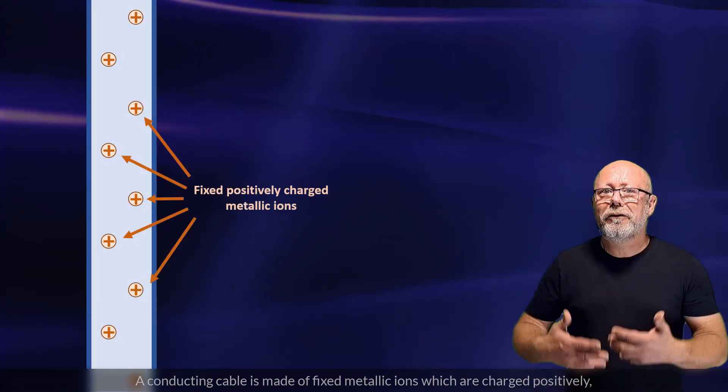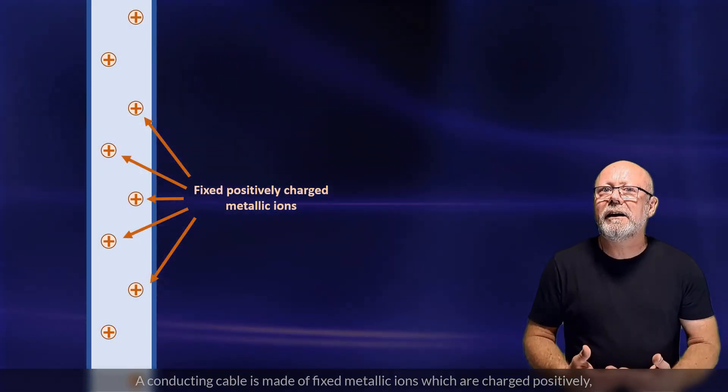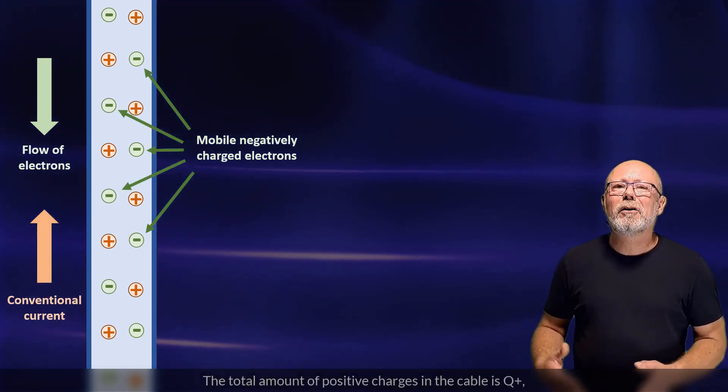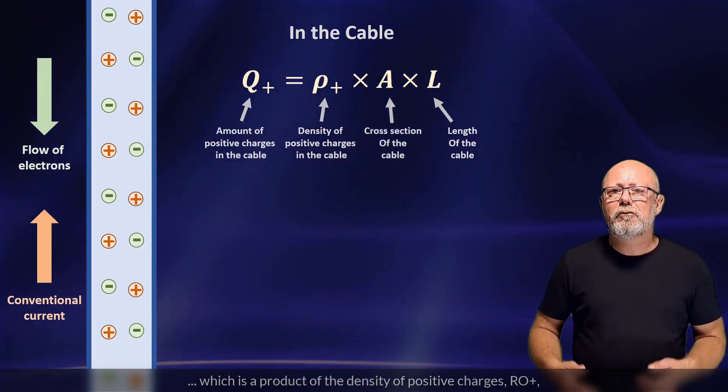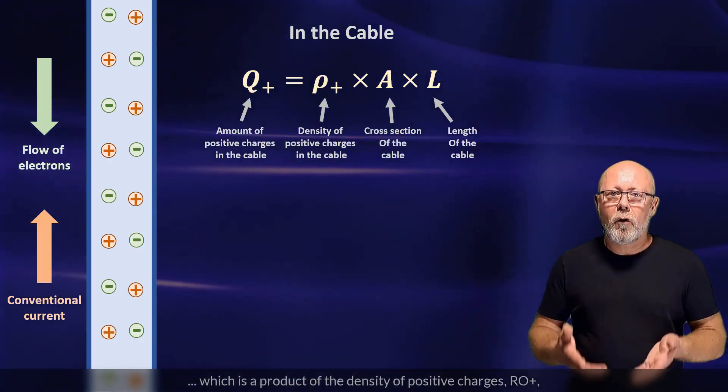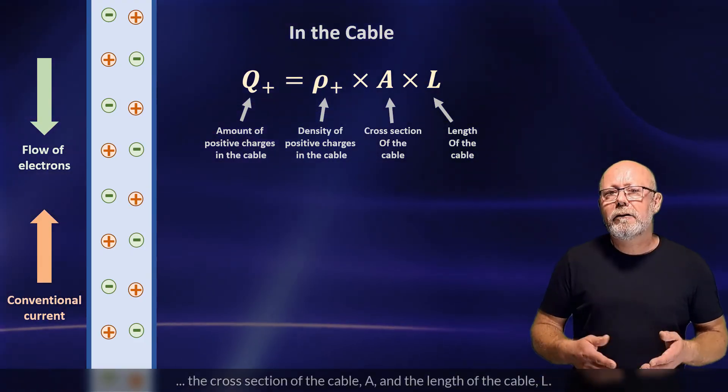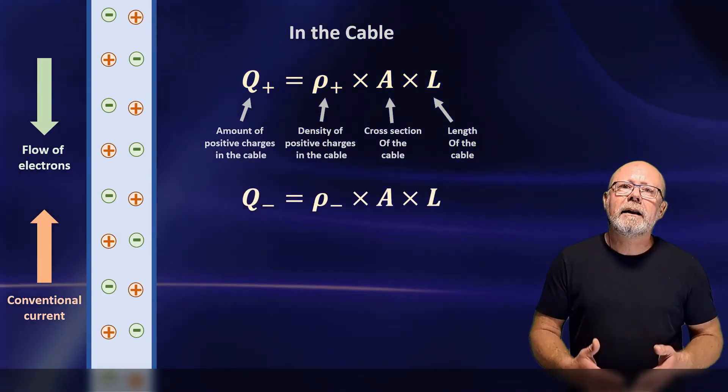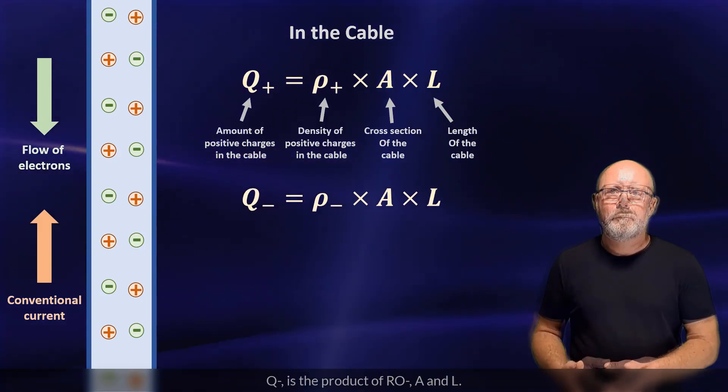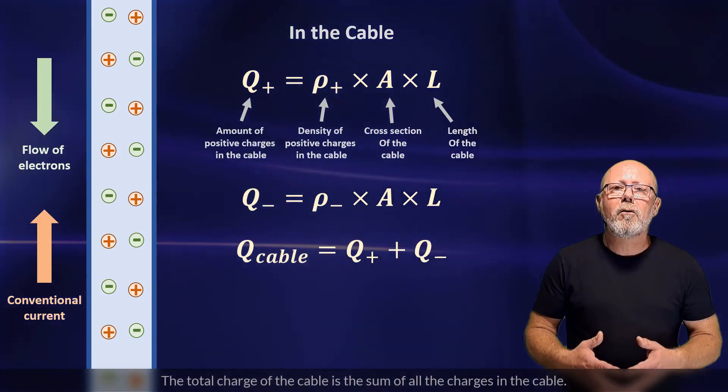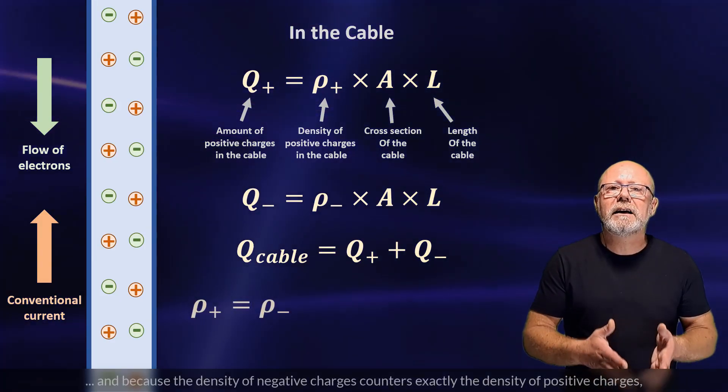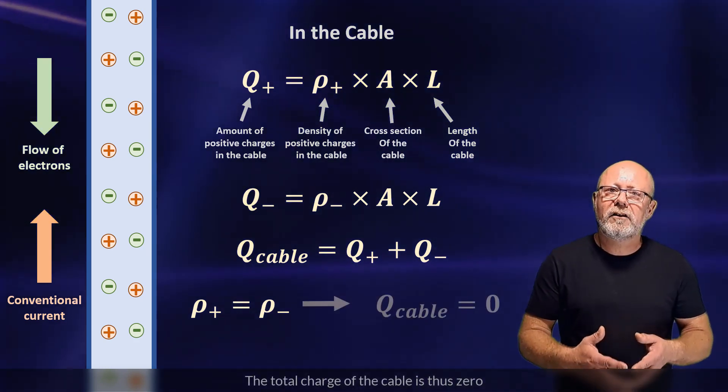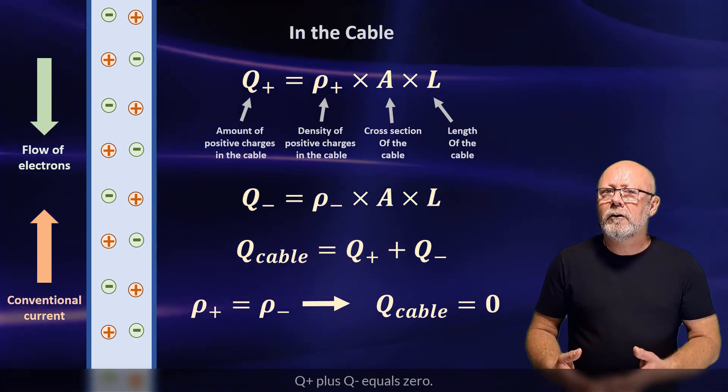A conducting cable is made of fixed metallic ions, which are charged positively, and located in a sea of free electrons charged negatively. The total amount of positive charges in the cable is Q+, which is a product of the density of positive charges, ρ+, the cross-section of the cable, A, and the length of the cable, L. For the total amount of negative charges, it's the same idea. Q- is a product of ρ-, A and L. The total charge of the cable is the sum of all the charges in the cable. And because the density of negative charges counters exactly the density of positive charges, the total charge of the cable is thus zero. ρ+, plus ρ-, equals zero.